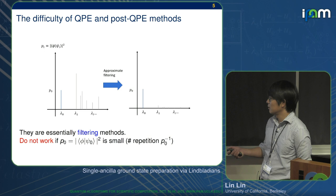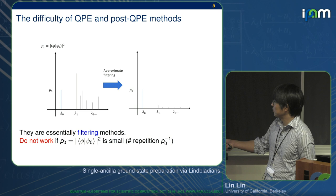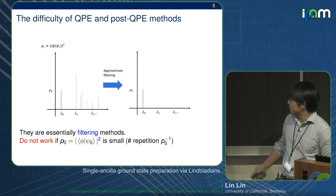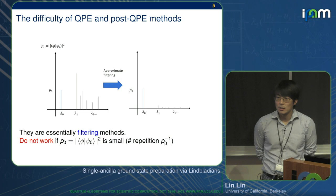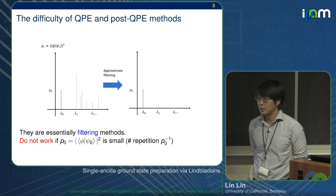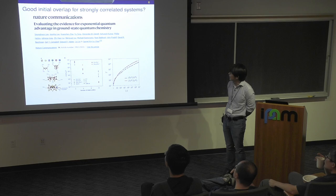The difficulty of QPE and post-QPE methods — QSP, LCU, and so forth — is that they are essentially filtering methods. By filtering, it means you have some good things: you have an initial state with overlap P zero, that's the good part, all the rest is the bad part. Then you filter away the bad stuff. But you cannot amplify better than quadratic amplification. So if P zero is very small, you need to pay in terms of the number of repetitions, roughly P zero inverse. If P zero is zero, it's just dead. The QMA hardness never said P zero is necessary.